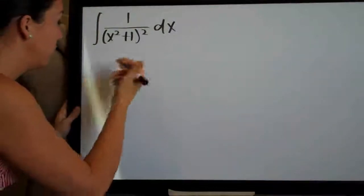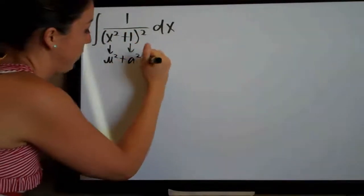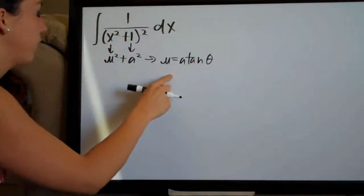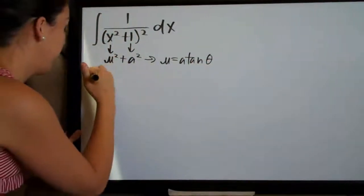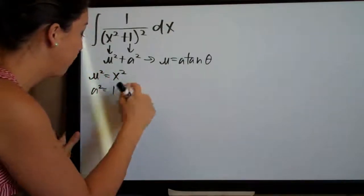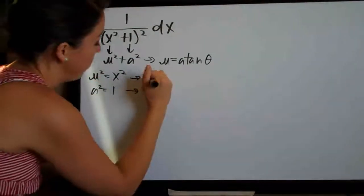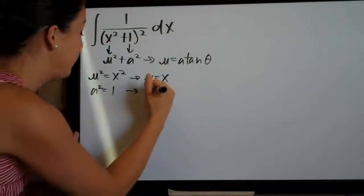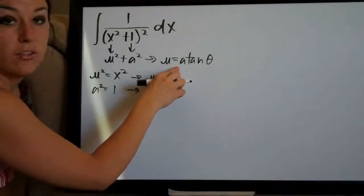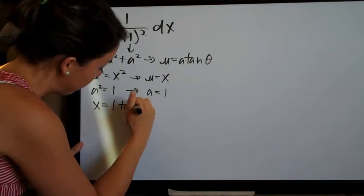We're going to correlate this to u squared plus a squared, which comes along with the substitution u equals a tangent theta. In order to solve for u and a, we'll set u squared equal to x squared and a squared equal to 1. Taking square roots, we get u equals x and a equals 1. Plugging those in, we get x equals 1 times tangent of theta.